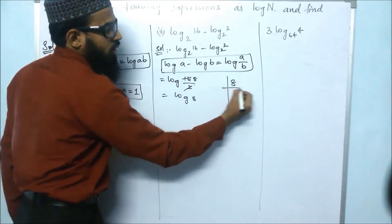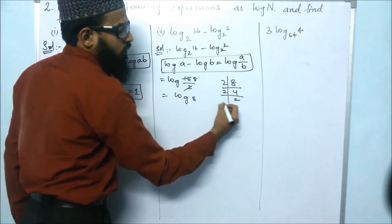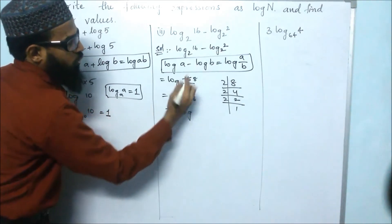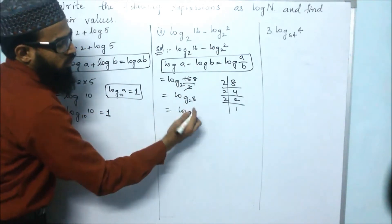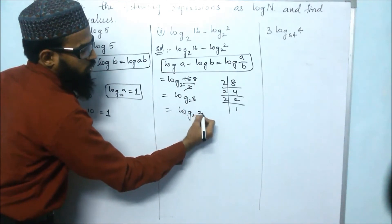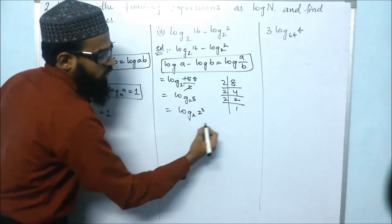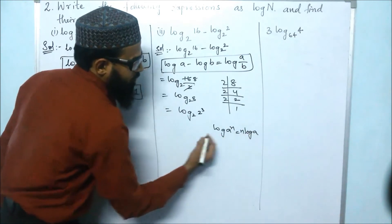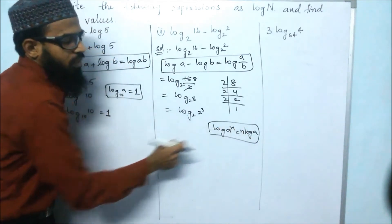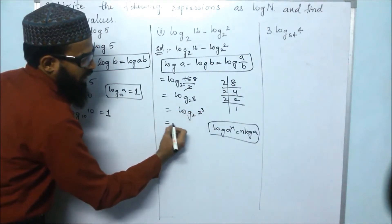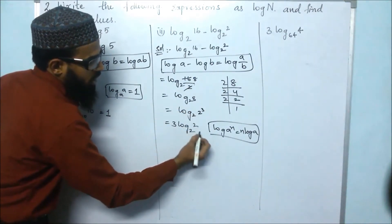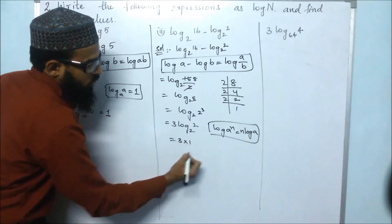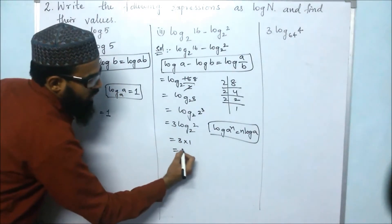What are the factors of 8? 2×4 is 8, 2×2 is 4, 2×1 is 2. So 8 equals 2 to the power of 3. Using the formula log a to the power of n equals n log a, the power 3 comes in front. So we get 3 log 2 base 2. Since the value equals the base, log 2 base 2 equals 1, so 3 into 1 equals 3.